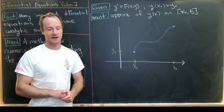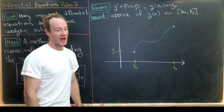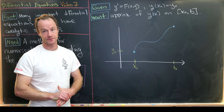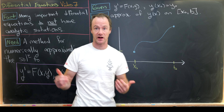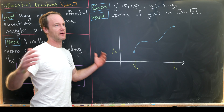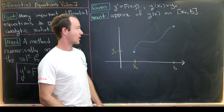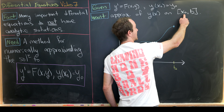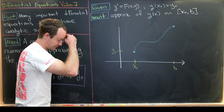Let's say we're given a first-order differential equation — y prime as a function of x and y — plus an initial condition: y evaluated at x-naught equals y-naught. We need an initial condition to find a numerical approximation because we can't numerically approximate a whole infinite family of solutions. Given this data, we'd like to approximate the solution y(x) on an interval starting at x-naught and ending at b, though we could also approximate backwards.